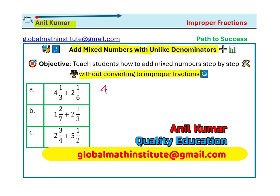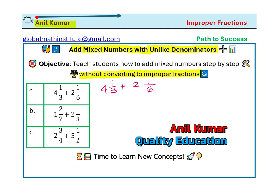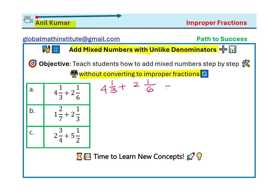We need to do 4 and 1/3 plus 2 and 1/6. You see 4 and 2 are whole numbers which can be straight away added. So we have 4 and 2 — we can add them up, and then we'll add 1/3 and 1/6 separately. So 4 plus 2 equals 6, and we have 6 plus 1/3 plus 1/6. We've added the whole numbers and now we're going to add the fractions — that is what a mixed number is.